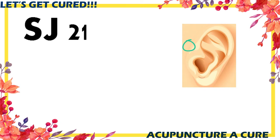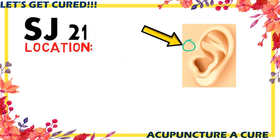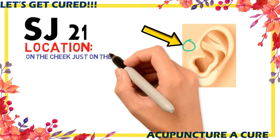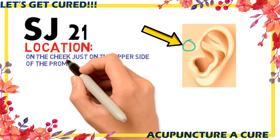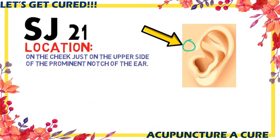Acupoint SJ-21 is situated on the cheek, on the upper side of the prominent structure of the ear.